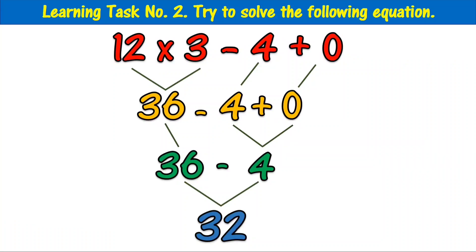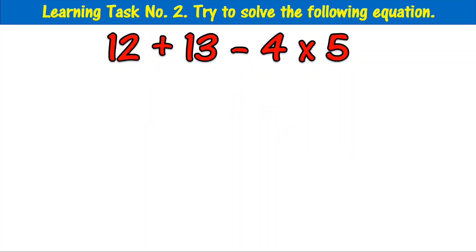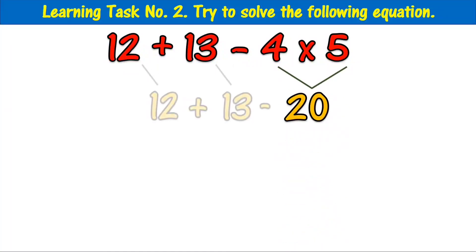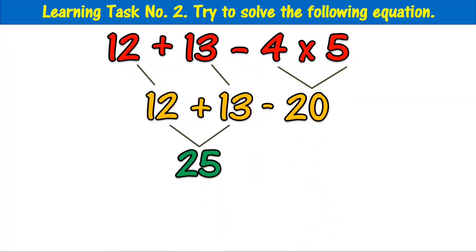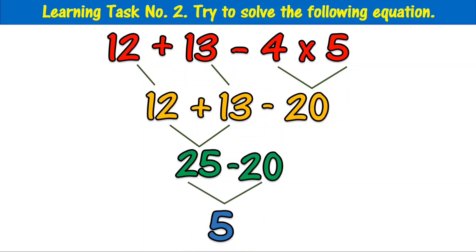12 plus 13 minus 4 times 5. The answer is 5.